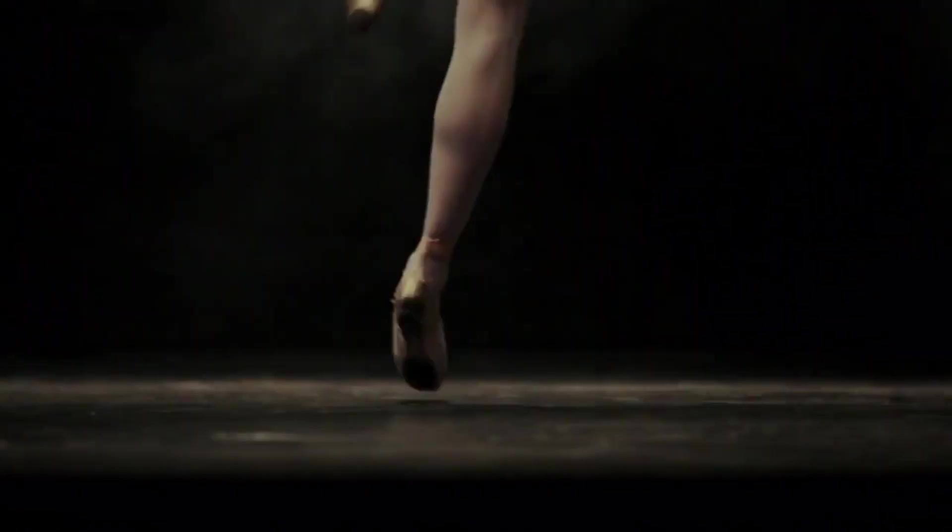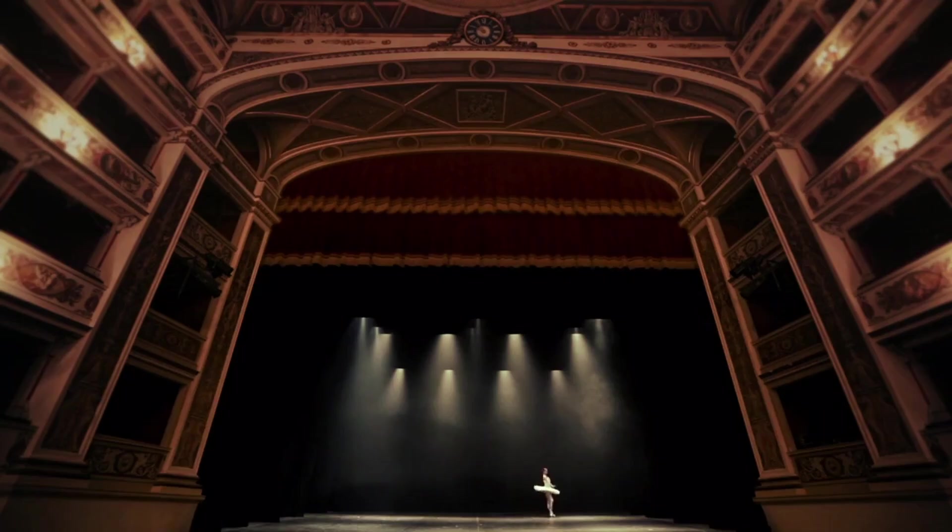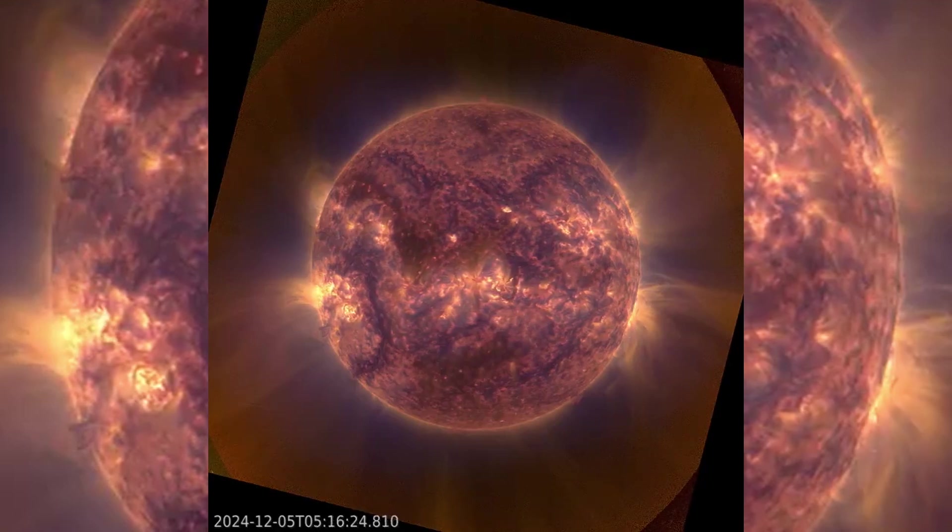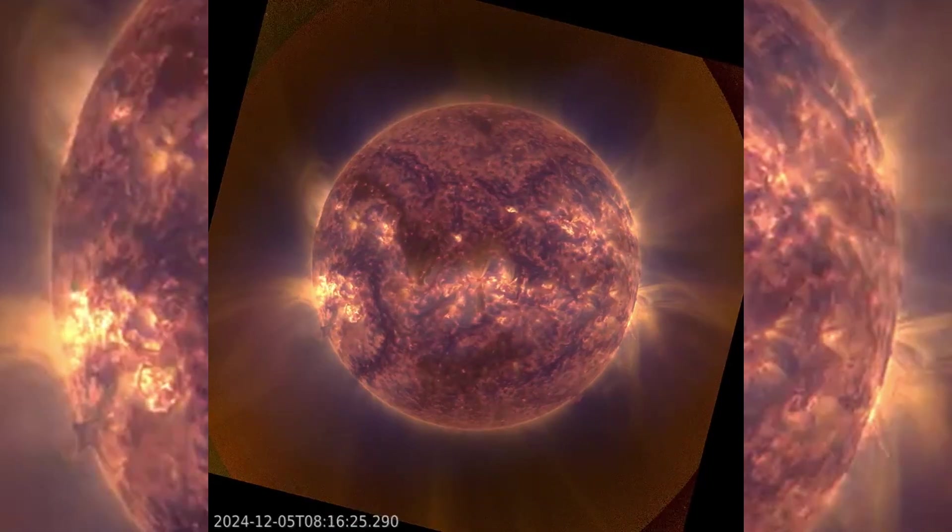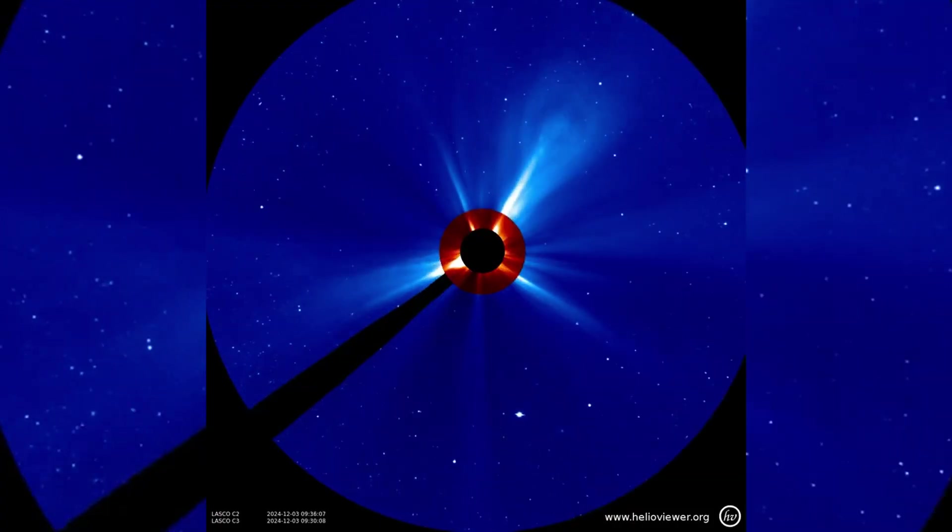Think of it like this: your cells are performing a delicate dance, and solar storms are like unexpected stage lights suddenly changing intensity and direction. While some dancers adapt quickly, others might stumble, leading to various health effects.